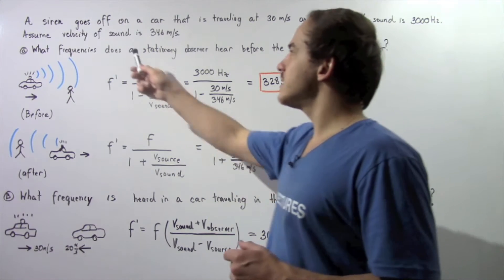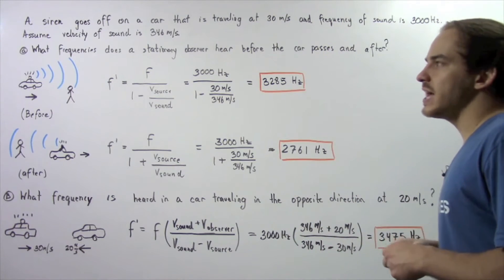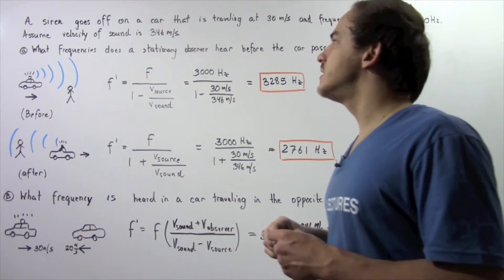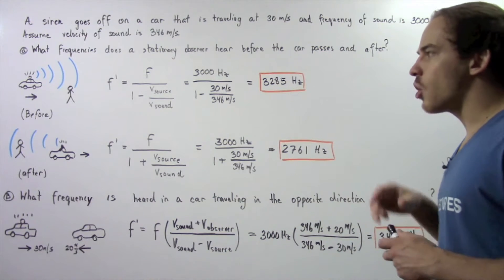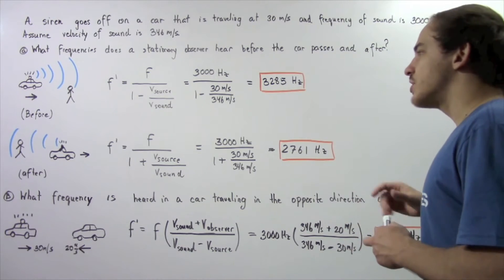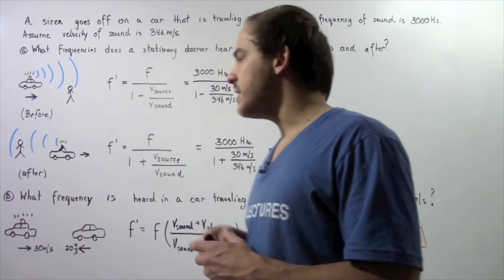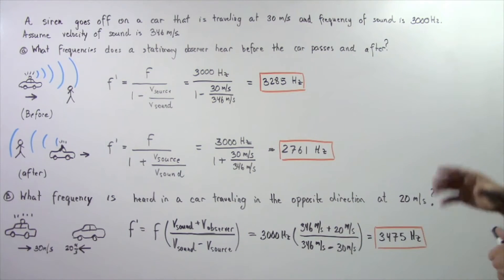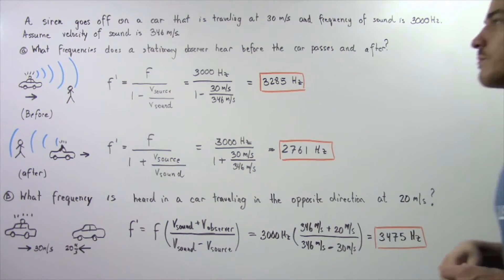Assuming the velocity of the sound wave is 346 meters per second, in part A, what frequencies does a stationary observer hear before the car passes and after the car passes? In part B, what frequency is heard in a car traveling in the opposite direction toward the first car at a velocity of 20 meters per second?